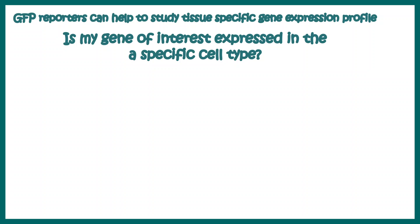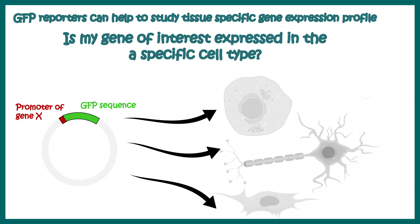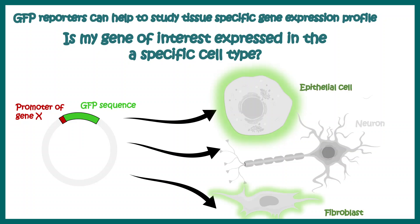GFP reporters can also help us study tissue-specific gene expression. We can take an expression vector with a particular promoter for gene X and replace the gene body sequence with the GFP sequence, then transfect it into different cell types — for example, an epithelial cell, a neuronal cell, and a fibroblast. If we see GFP fluorescence from the fibroblast and epithelial cell but not from the neuron, that tells us this promoter is active in epithelial and fibroblast cells but not in neurons. Thus, tissue-specific gene expression profiling can be done with GFP-based reporters.